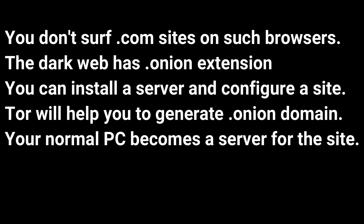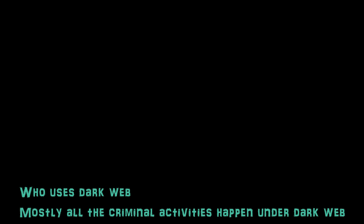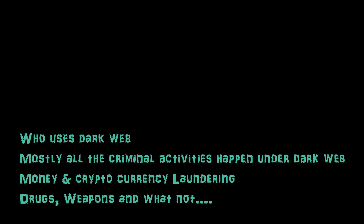You can install a server and configure a site on your PC, and that PC can work as a server for a dot-onion site. Because these servers are private computers, they are not easily traceable — your normal PC becomes a server for the dot-onion site. Tor helps you generate free domain names with a dot-onion extension, and using that extension, if your PC is on, someone can directly access your computer with that domain.